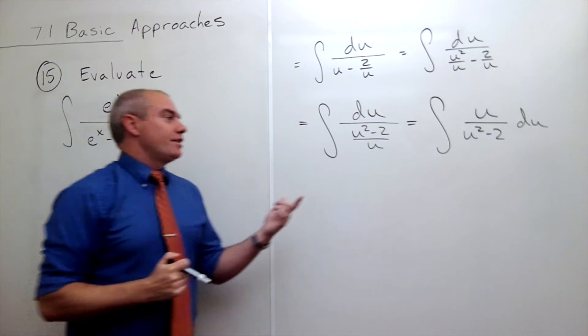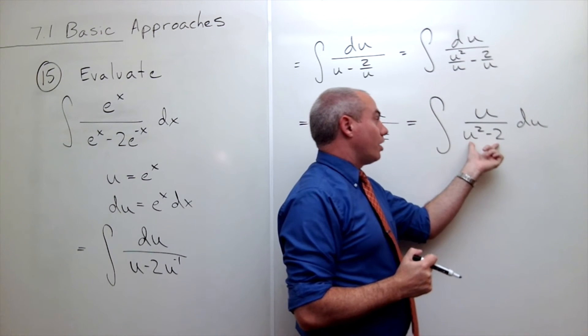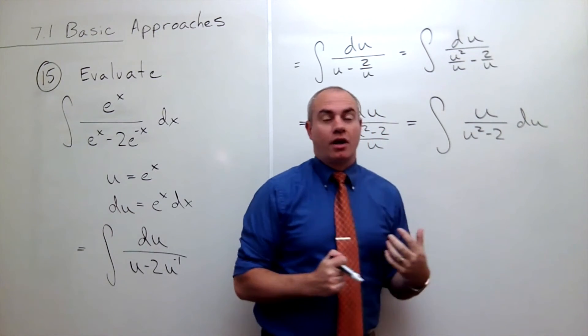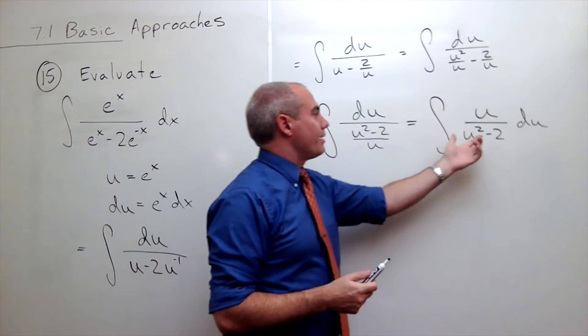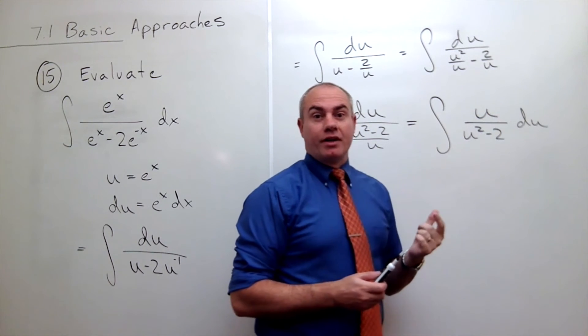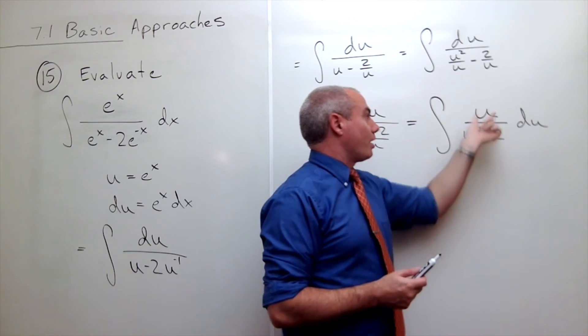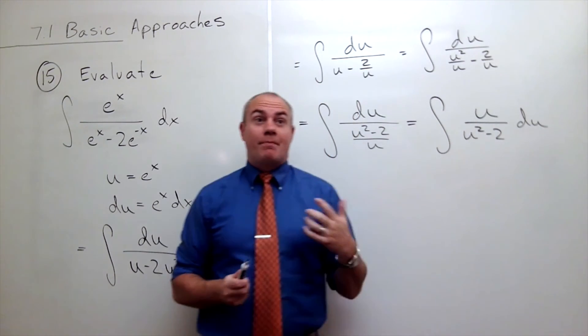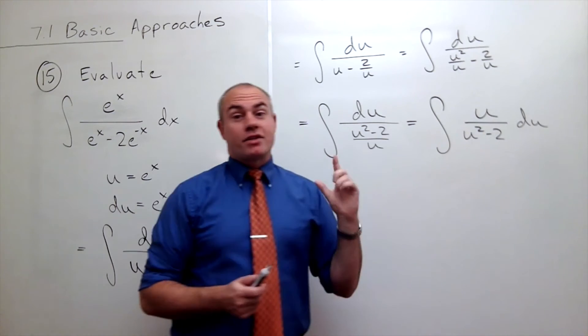But now if we look at this guy, this is very close to being a natural log. And what do I mean it's close to being a natural log? I mean that if I take the derivative of the bottom I get the top. So if the derivative of the bottom is the top, then I just get natural log of the absolute value of the bottom. It's close but not quite.